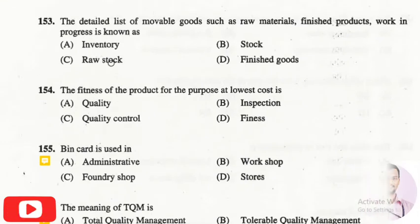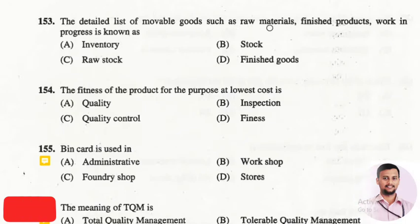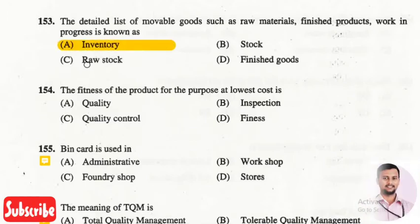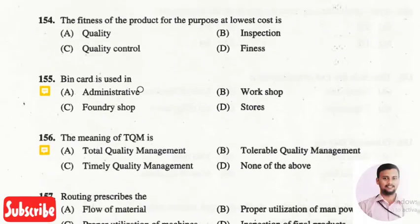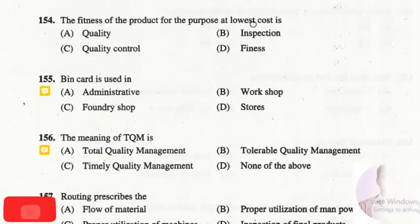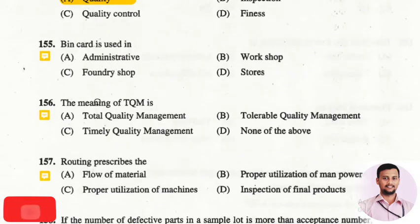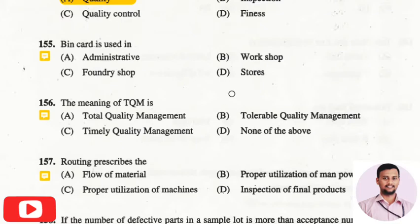The next question is: the detailed list of movable goods such as raw materials, finished products, and work in progress is known as? The right option is option one, that is inventory. The next question is: the fitness of the product for the purpose at the lowest cost is? The right answer is option A, that is quality.